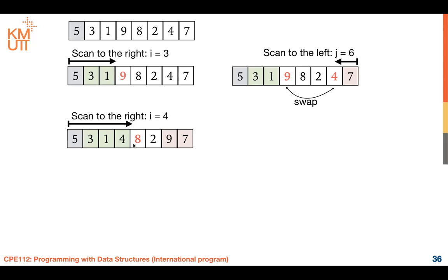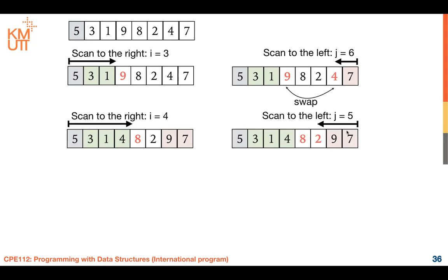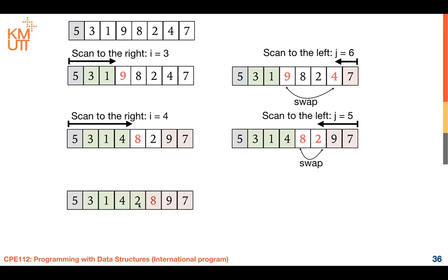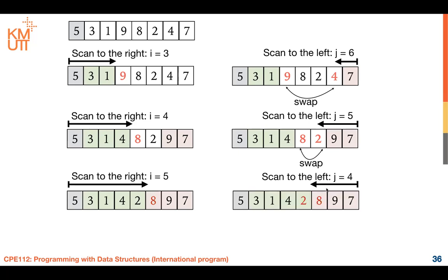Next, eight is greater than five — stop. Then two is less than five — stop. Swap eight and two. Now i is at index five and j is at index four. If i is greater than j, it means the indices have already crossed each other, and we stop. The green elements are less than five and the pink elements are greater than five.